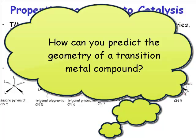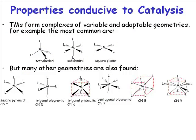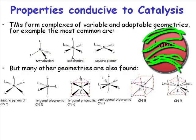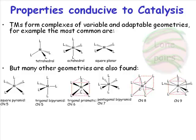Well, how do I predict the geometry of a transition metal compound? In transition metal chemistry, you don't have to worry about lone pairs. All that you have to do is arrange the ligands in space around your transition metal to minimize repulsion.